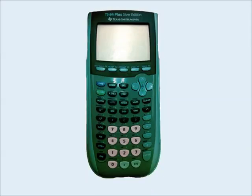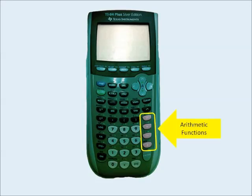Let's start with the keys. The number keys are in the lower center — they're a creamy color. The basic arithmetic functions — add, subtract, multiply, and divide — are to the right of the number keys in a pale gray color.